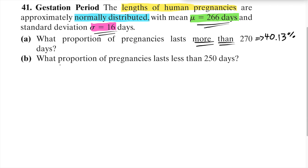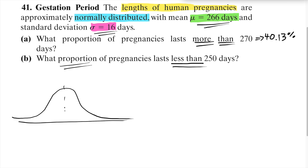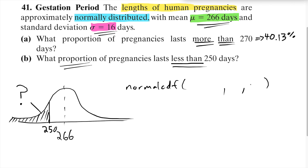Then we're asked a similar question: what proportion of pregnancies last less than a given number of days? We're looking for the area to the left of 250. Just like before, we're going to use normal CDF. Because we're working with the same distribution for this whole problem, the last two numbers are always going to be the same — the mean 266 and the standard deviation 16.